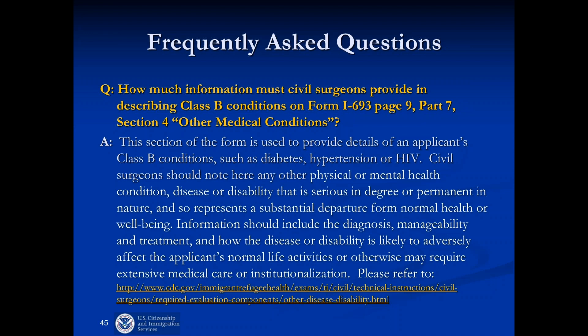Last question: For vaccines with a two-dose series like MMR and varicella, if the patient gets the first vaccine, do we mark them current or wait until they get the second vaccine? You can only administer the vaccine you're able to administer at the time. As long as you've given them what they needed to get at that point in the series, it's going to be their obligation to follow up and get subsequent administrations. As long as all required vaccines show they're current at the point in time when you sign the form, that's sufficient. Thank you so much, Bruce, for your talk today and for the Q&A.